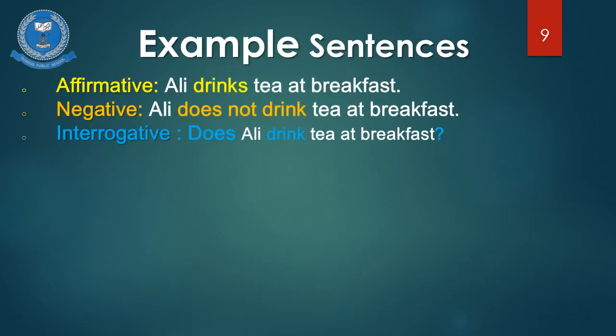Let us look into some examples. Sentence number 1. Affirmative: Ali drinks tea at breakfast. Since Ali is a singular subject, we add 'S' with our verb, forming it into 'drinks'. Negative: Ali does not drink tea at breakfast. Interrogative: Does Ali drink tea at breakfast? Our subject is singular, so we have used 'does' as our helping verb. Since we are using 'does', we will not add 'S' with the verb.